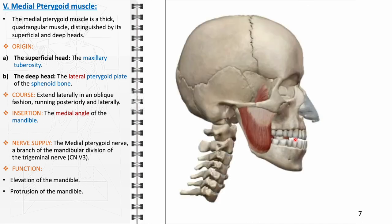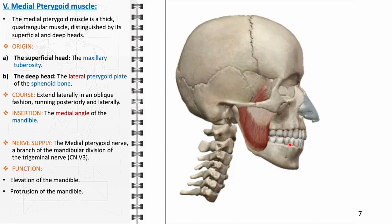The medial pterygoid muscle, in coordination with the lateral pterygoid, plays a vital role in controlling the lower jaw's movements in multiple planes, contributing to complex actions like chewing, speaking, and yawning. Clinically, the medial pterygoid muscle is significant in diagnosing and treating various orofacial conditions. Dysfunction or hypertrophy of this muscle can contribute to temporomandibular joint disorders, leading to pain, discomfort, and functional impairment in jaw movements.